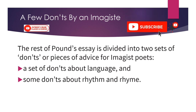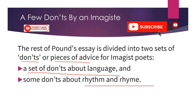After quoting these advices from Mr. Flint, the rest of the essay presents Pound's own don'ts. The rest of the essay is divided into two sets of don'ts — pieces of advice for imagist poets — covering language and rhyme and rhythm.